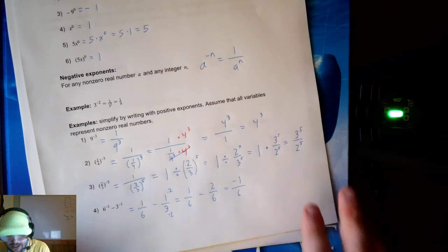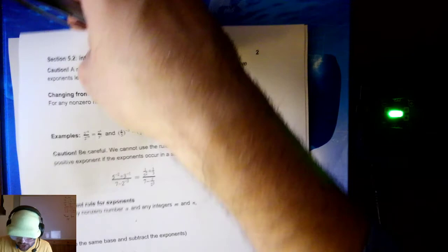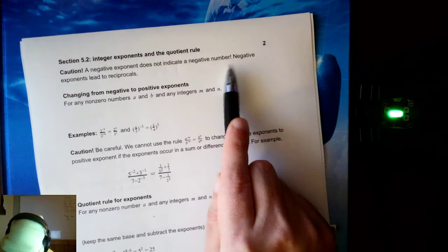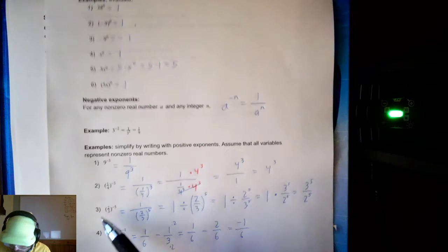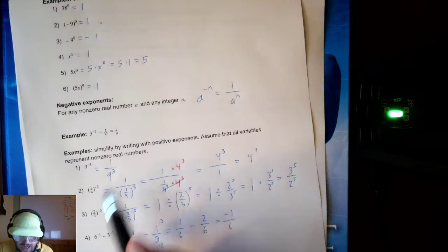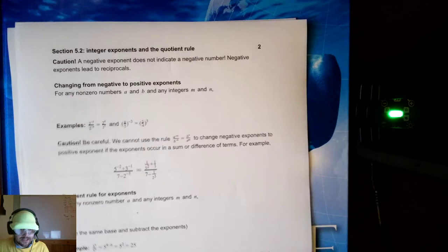Notice these came in several different flavors. Subtraction is always going to be messy — it never works nicely with exponents. But these fraction ones, we're going to see a trick in a moment. Now, a caution: a negative exponent does not indicate a negative number. Negative exponents lead to reciprocals. Notice things are getting flipped around — one over four became four over one, two over three became three over two. That is what is called reciprocals. There weren't any negative numbers after applying the exponent rule. Don't let that trip you up.